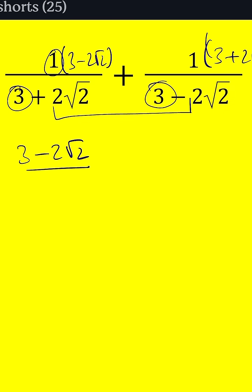But notice, they form a difference of two squares. a plus b times a minus b is a squared minus b squared. So we get 9 minus 8, because if you square this number, you get 8.